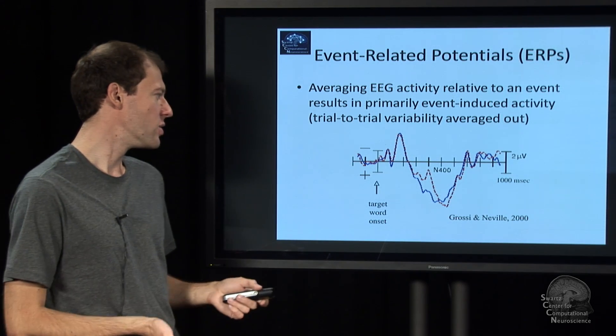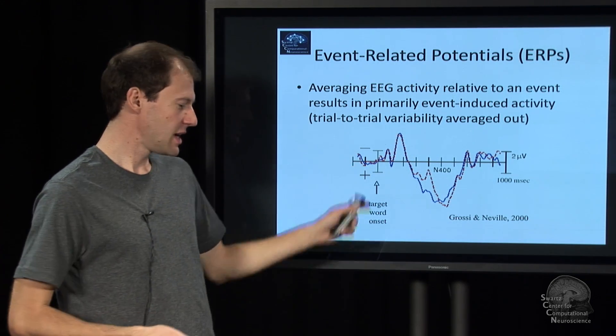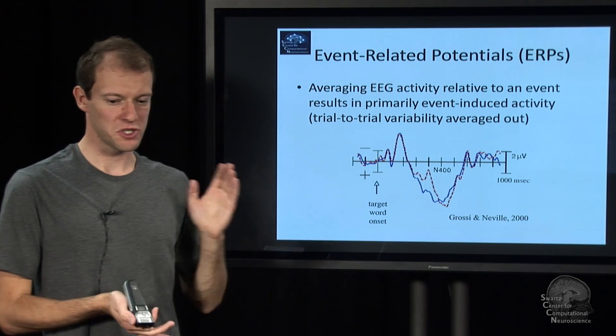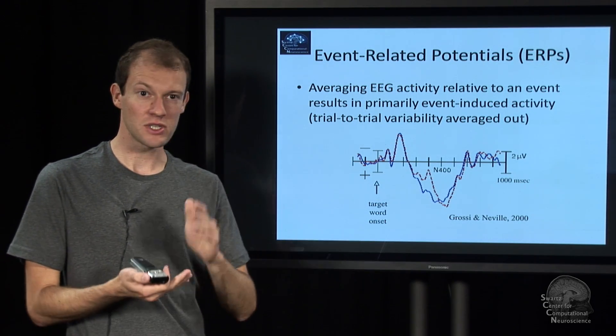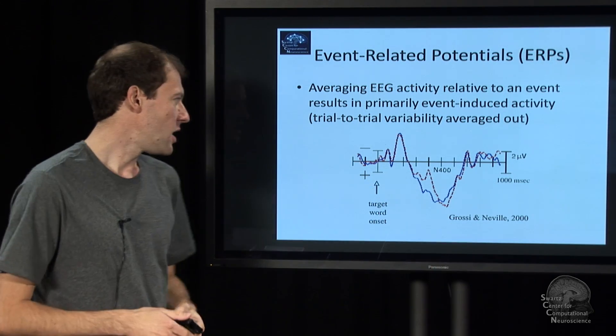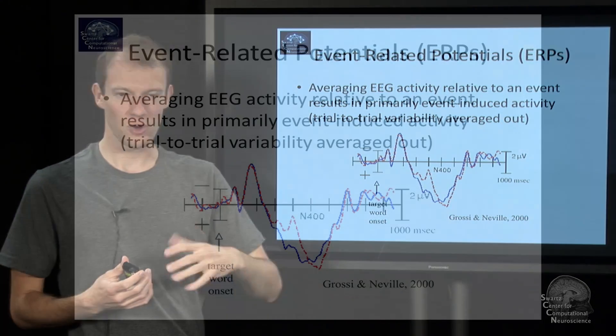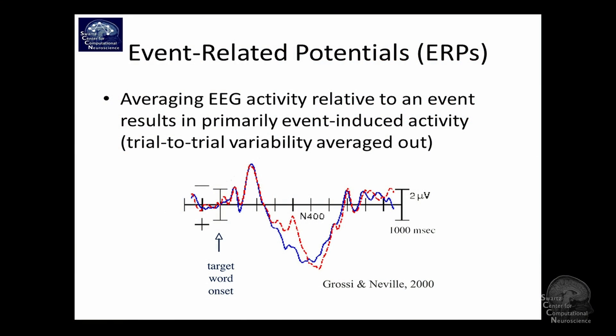...like you have an event and you repeated it, say, 100 times because you presented the same thing to the person 100 times — if you average all that, all the variation and randomness cancels out, and what remains is what's systematic across all those instances. That's what we call an event-related potential.